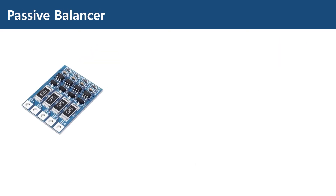The passive balancer dissipates excessive power of a fully charged cell. The passive balancer module has a large resistor, which is also called a bleeding resistor, which dissipates the power. In this case, the bleeding resistor is 62 ohms, so the current flowing through this resistor is about 68 milliamperes, which is 4.2 volts divided by 62 ohms.